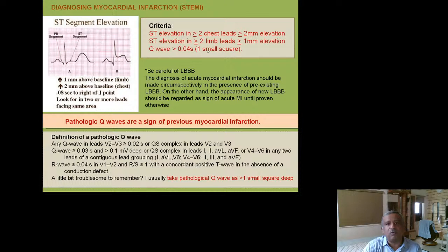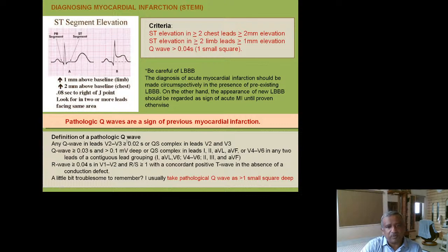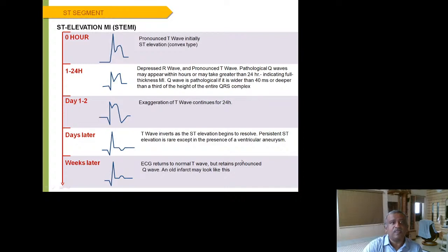A Q wave of more than 1 small square is pathological. If the Q wave is 1.5 to 2 small squares deep, it is pathological and clinically significant. ST elevation of around 4 mm is significant. For practical purposes, if the Q wave exceeds 1 small square, give it importance — this is the definition of a pathological Q wave.